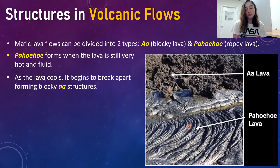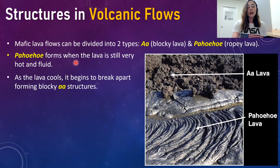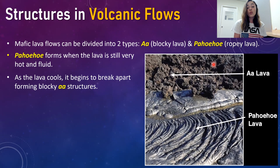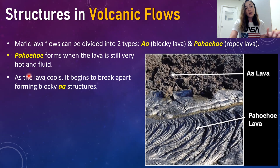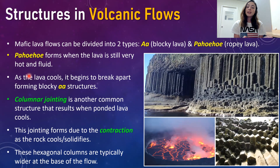When we see these structures in the field, they tell us a little bit about how, when, and from what those structures crystallized. Pahoehoe forms when lava is still very hot and fluid, whereas aa or blocky lava forms as lava starts to cool and begins to break apart. It's not hot and fluid enough to form the ropey structures anymore — it starts to break apart and becomes blocky.